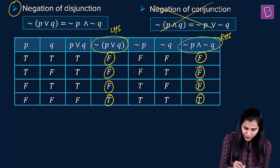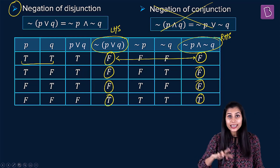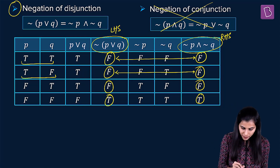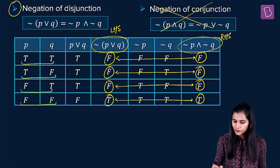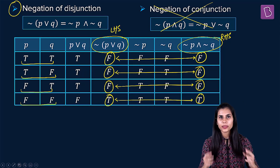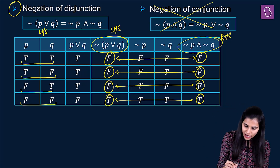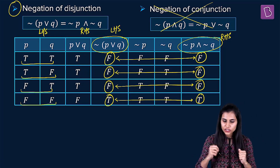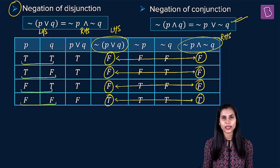Comparing the two columns: when both P and Q are true, both sides are false. When P is true and Q is false, both are false. When P is false and Q is true, both are false. When both are false, both are true. In every scenario the truth values coincide exactly, confirming that the LHS and RHS statements are equivalent. Using the exact same drill you can prove the negation of conjunction as well.